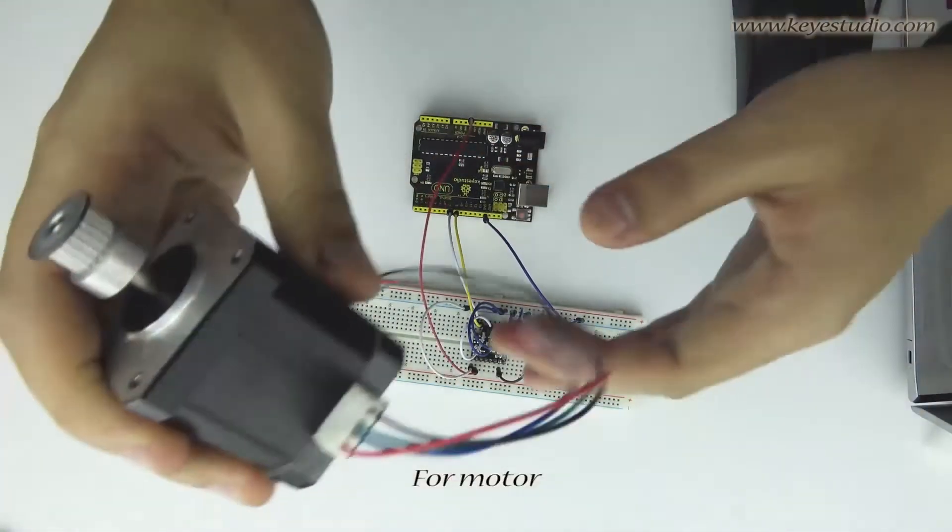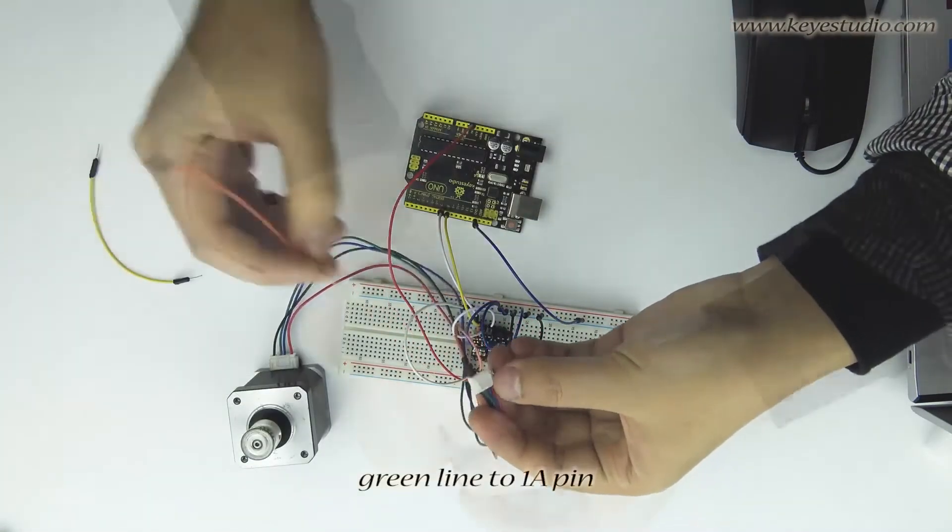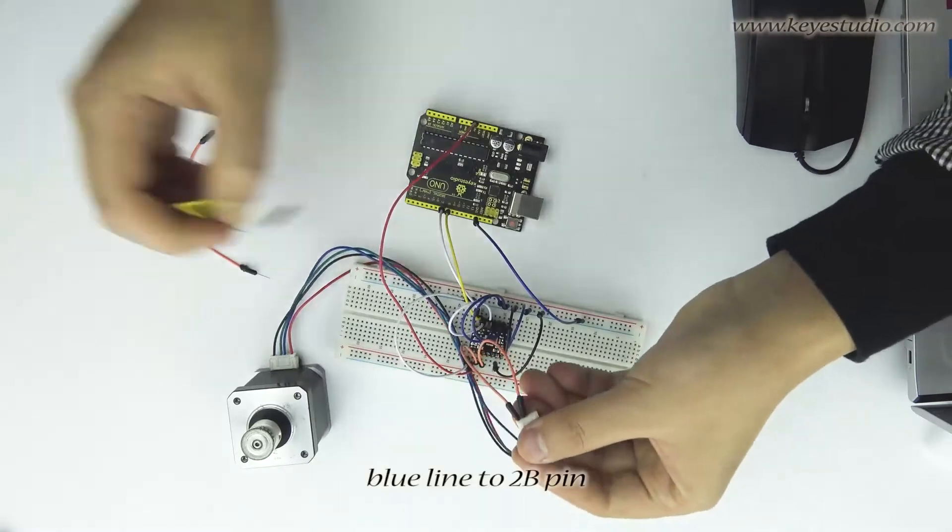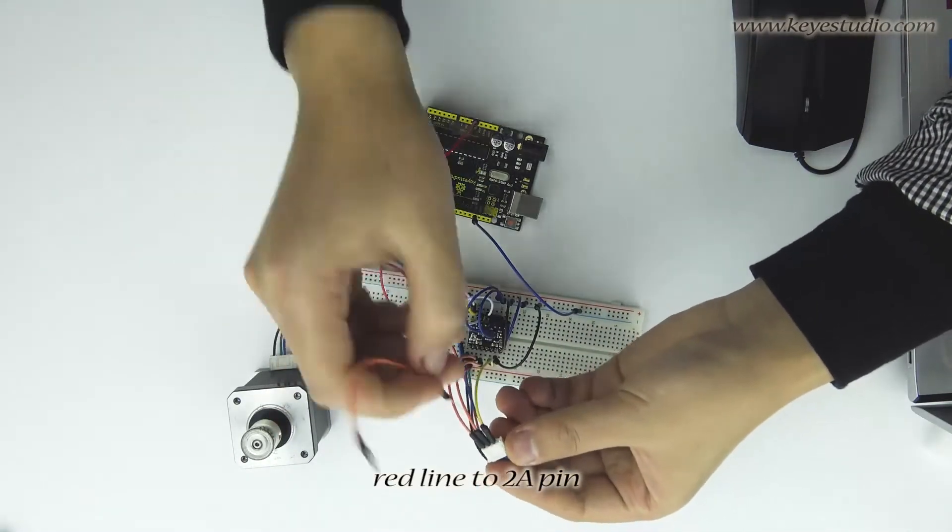For the motor, connect its black line to 1B pin of driver, green line to 1A pin, blue line to 2B pin, red line to 2A pin.